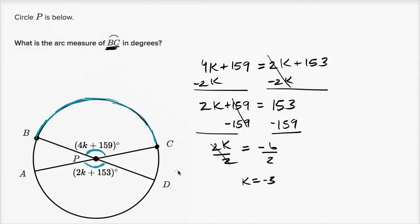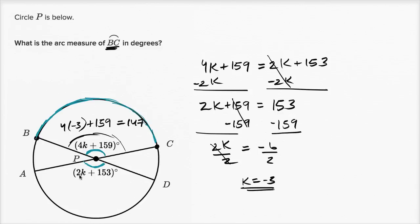We're not just solving for K — we need the angle measure, which equals 4K plus 159. That's 4 times negative 3 plus 159: negative 12 plus 159 is 147 degrees. We can verify with the other angle: 2 times negative 3 is negative 6, plus 153 is also 147 degrees. So this central angle is 147°, which is the same as the measure of arc BC.